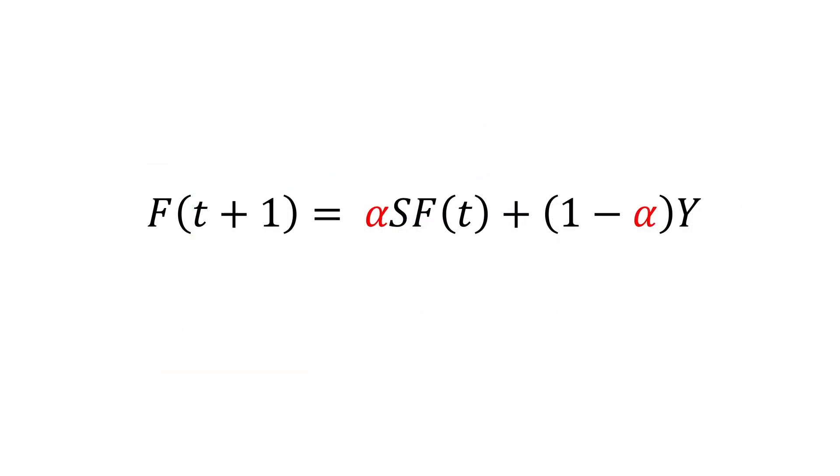Next, we look at alpha. Alpha is a tunable constant between 0 and 1. When it's 1, you ignore the second term. When it's 0, you ignore the first term.